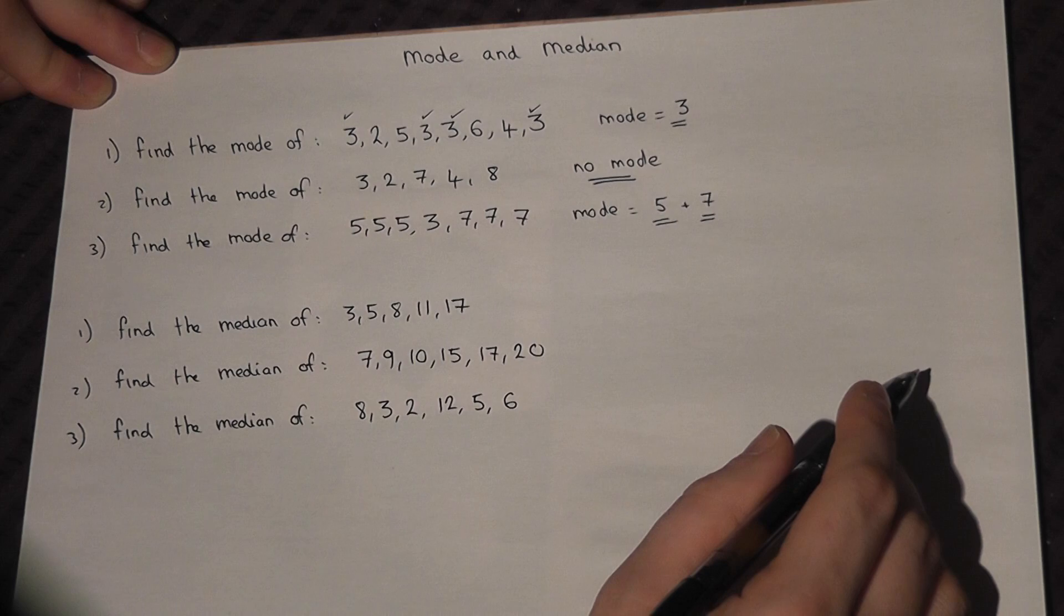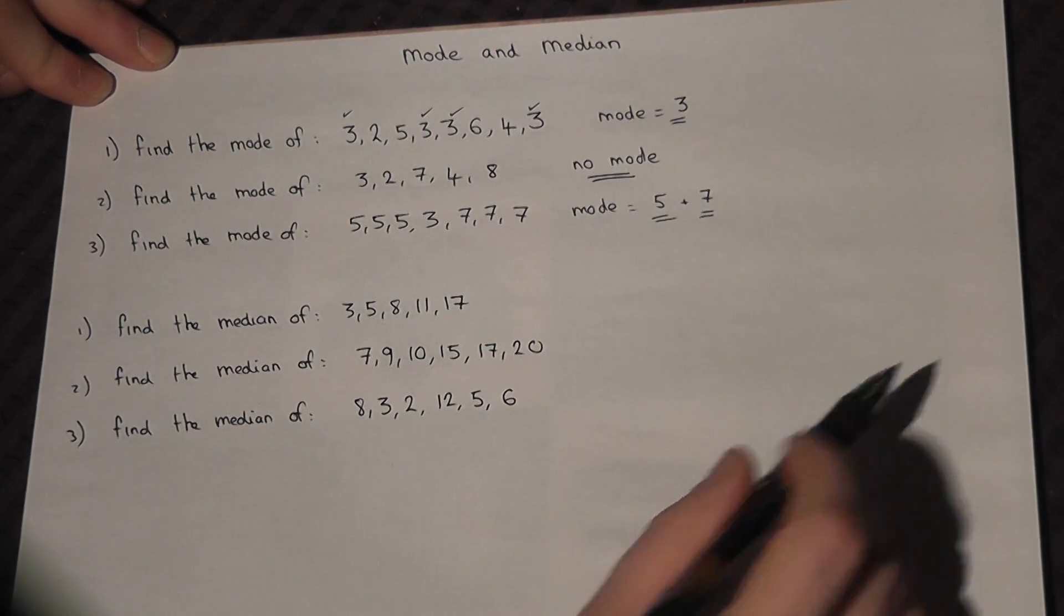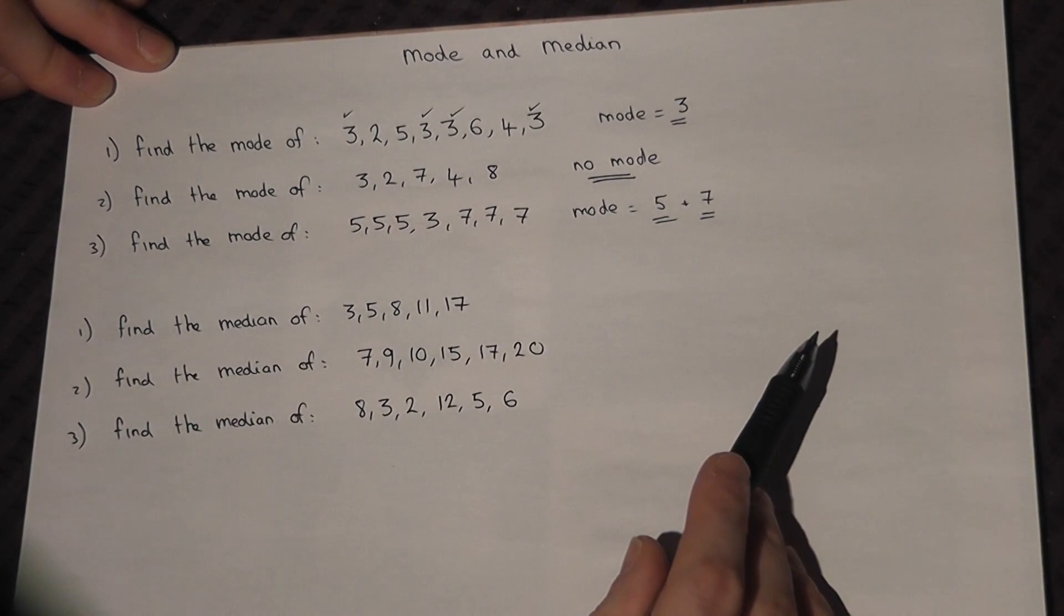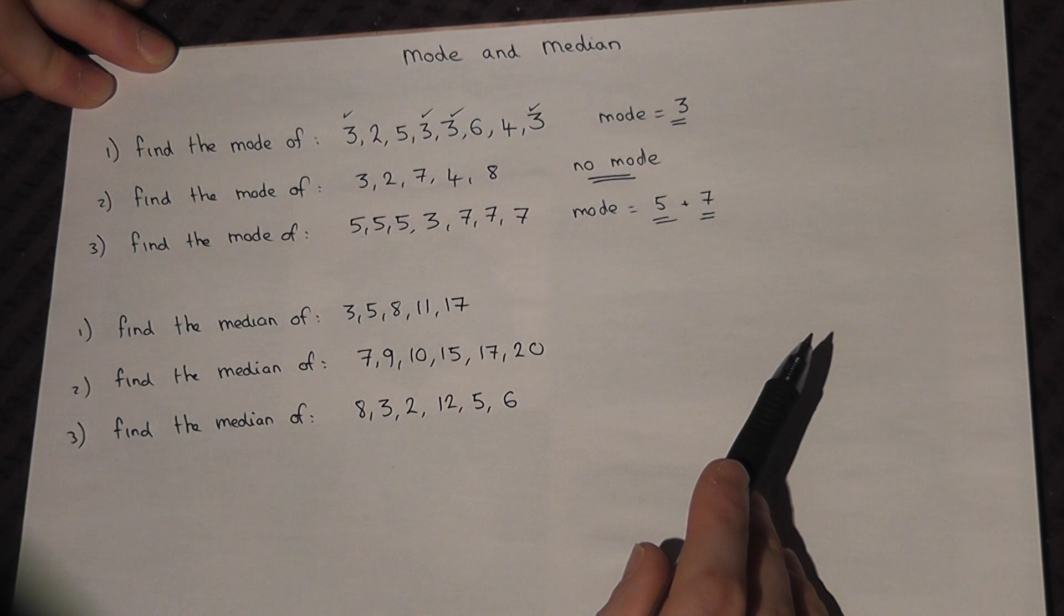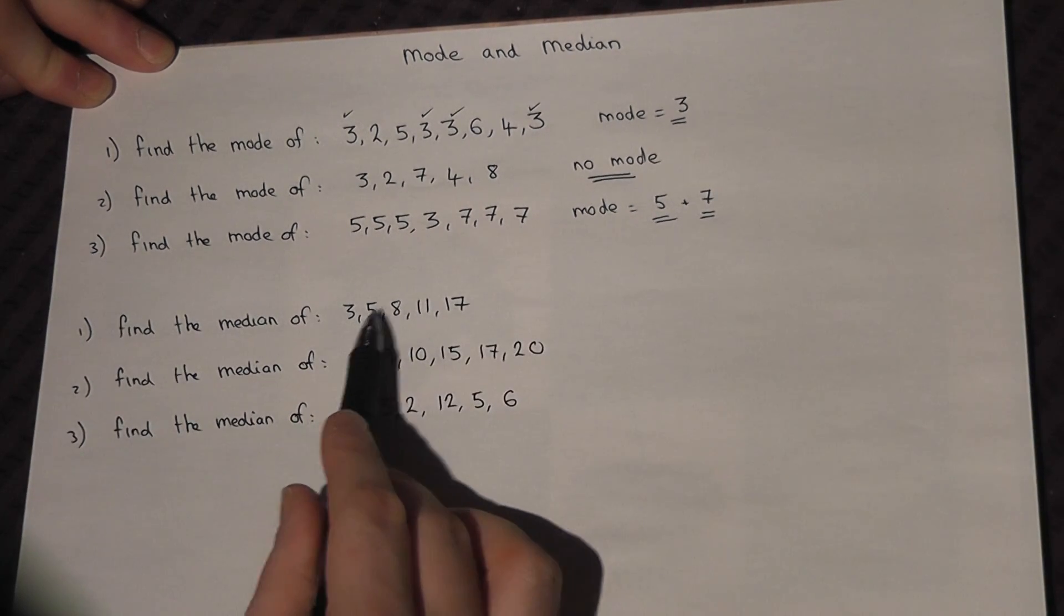So the mode is the most frequent number. The median is the middle number. So we've got five sets of data here.